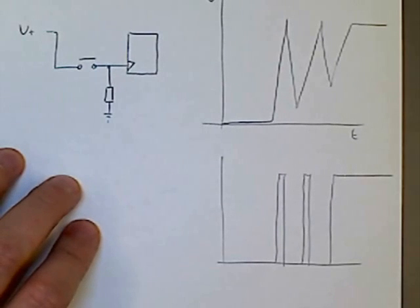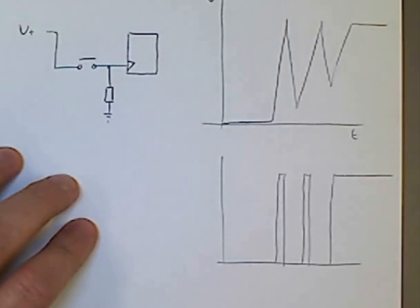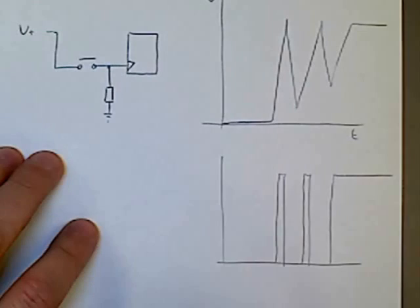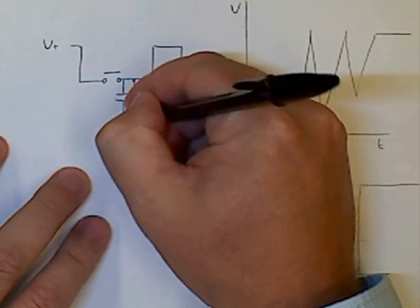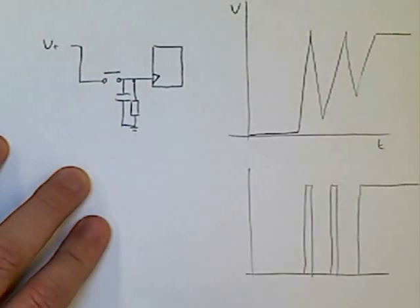There are a couple of easy ways that we can counter this. The simplest of all is to simply put a capacitor across our dropping resistor. Okay, like so.